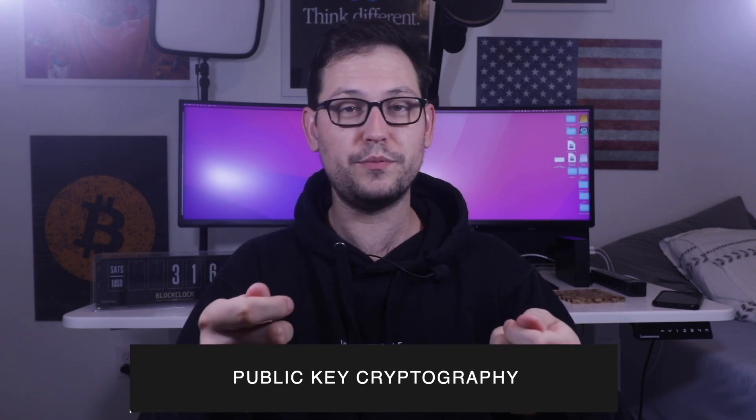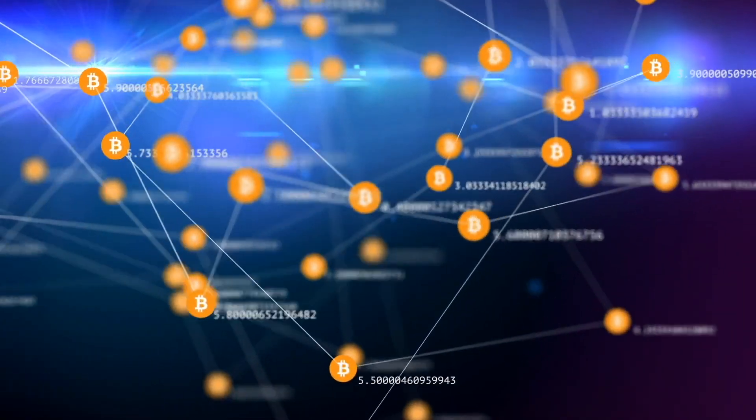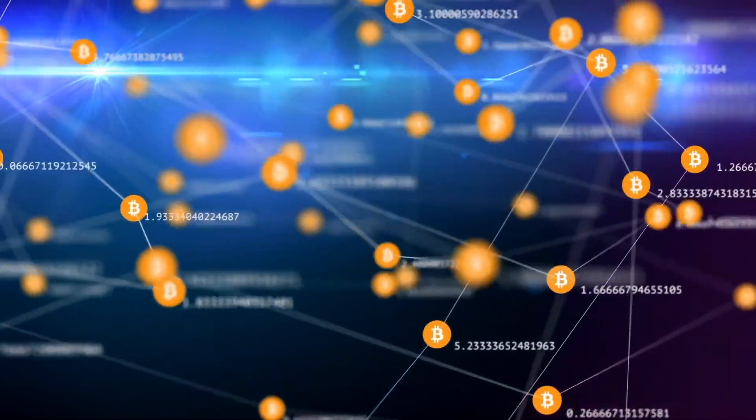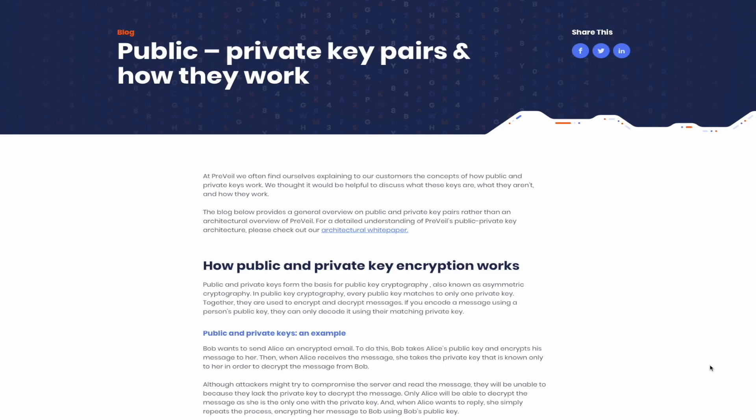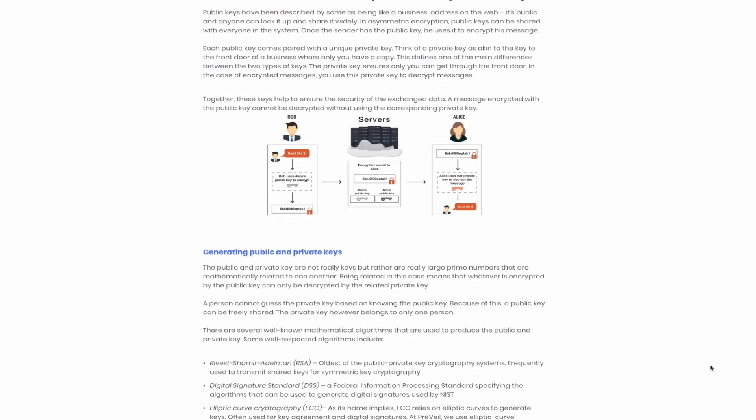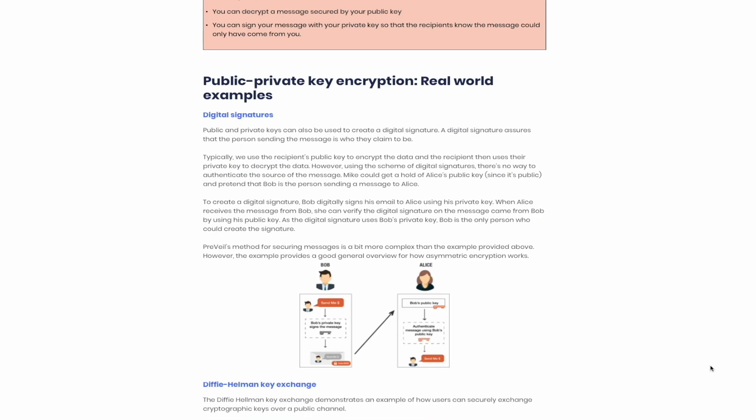Luckily for us, we have a very secure way to identify people digitally, and that's through something called public key cryptography. If you're familiar with Bitcoin, public key cryptography is one of the main building blocks of Bitcoin and is what allows us to transfer large amounts of money to each other trustlessly across the world. And it's the reason why your Bitcoin wallet, if stored properly, will never be hacked.